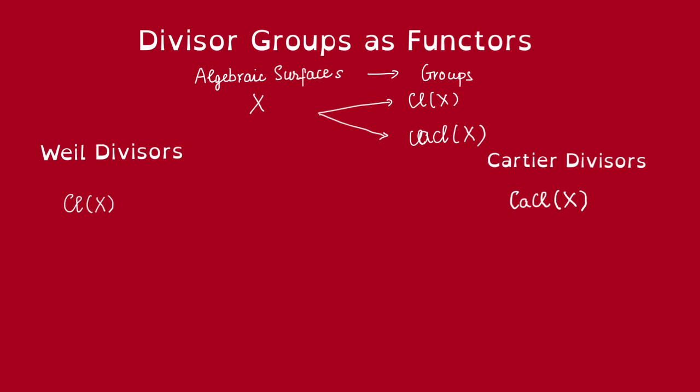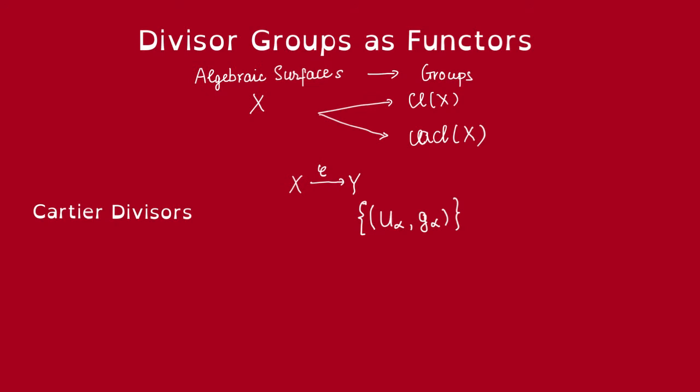Maps are a bit low-key. We want to use more high-tech tools, so we want to turn this into functors between categories. And what does that involve? We need to define the functors on objects—we did that. Now, we need to define the functors on morphisms. If we have a morphism between algebraic surfaces, how would that induce group morphisms on the divisor groups? Let's look at Cartier divisors first.